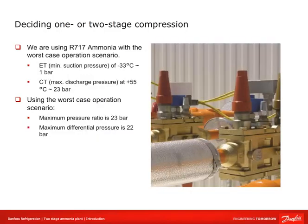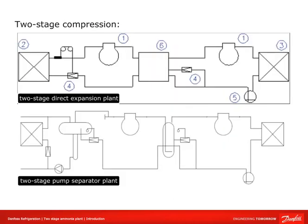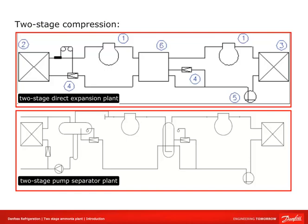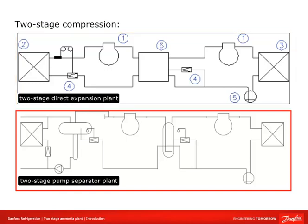Considering the actual worst-case design conditions of -33°C at the suction side and +55°C at the discharge side, the worst-case pressure ratio is 23 bar and the differential pressure is 22 bar. This means we need to construct a two-stage plant. There are two designs for a two-stage plant: a two-stage direct expansion plant and a two-stage plant with a pump separator. We are going to use the second design.